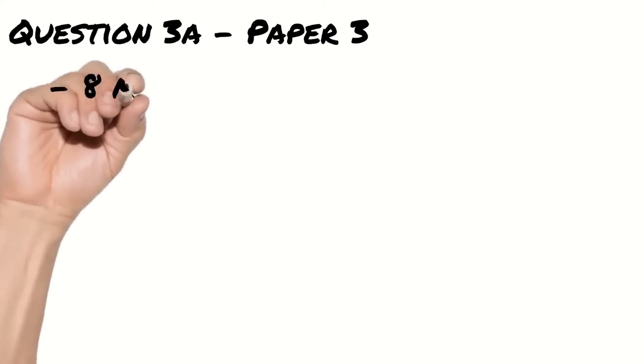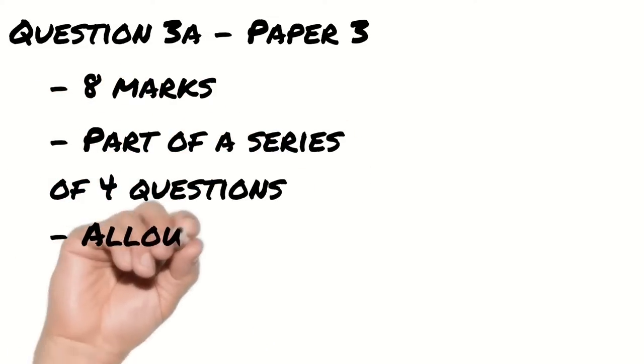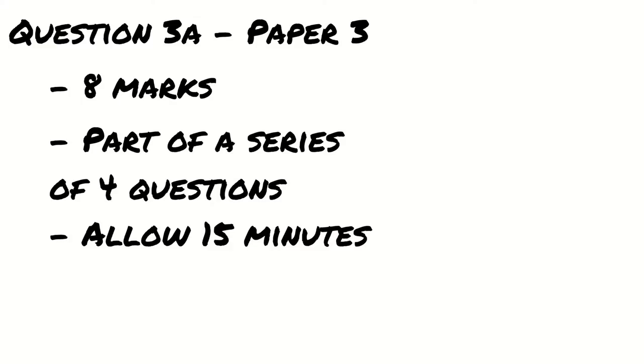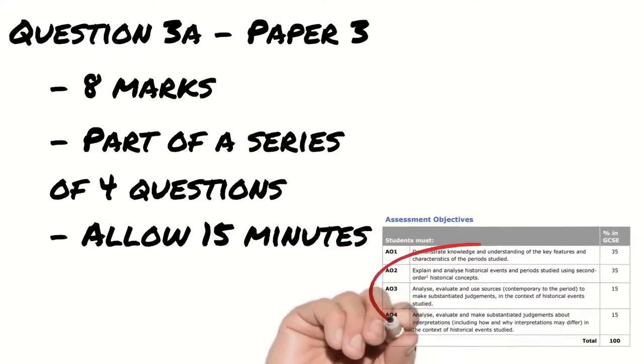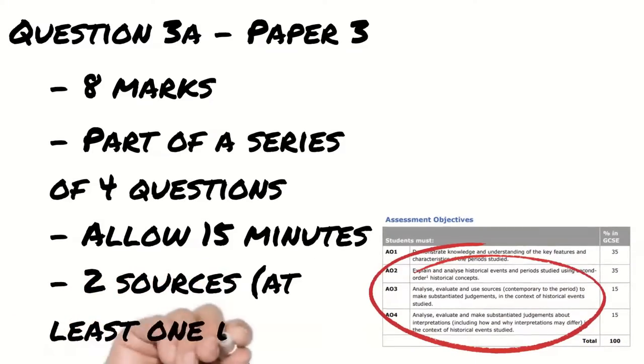Hi there guys, it's a bit of a long one this week because we're going to be taking a look at question 3a on paper 3. This question carries 8 marks and is part of a series of 4 questions on the same topic in your exam. You should be aiming to answer this in about 15 minutes. I'm going to be walking through all of the questions from the same series so you can see how this all fits together over the next few weeks. This question is focused on AO3 which asks you to analyse, evaluate and use sources contemporary to the period to make judgements in the context of historical events. This question includes two sources from the time. One of them may be visual but at least one will be written.